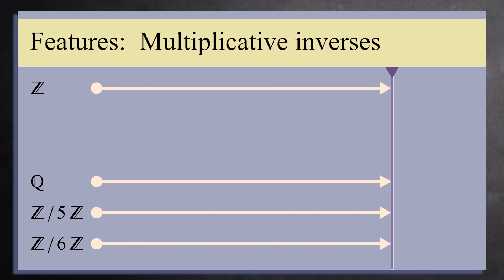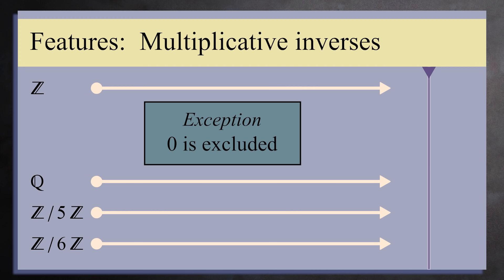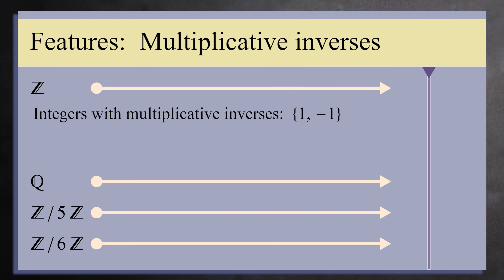Next, we'd like each number to have a multiplicative inverse. The additive inverse 0 is a big exception here. You cannot divide by 0, so this number cannot have a multiplicative inverse. But we'd like every non-zero number to have a multiplicative inverse. Sadly, we're about to lose 2 more sets. In the set of integers, only 1 and negative 1 have multiplicative inverses. None of the other integers have one. For example, the inverse of 2 under multiplication is 1 half, which is not an integer.